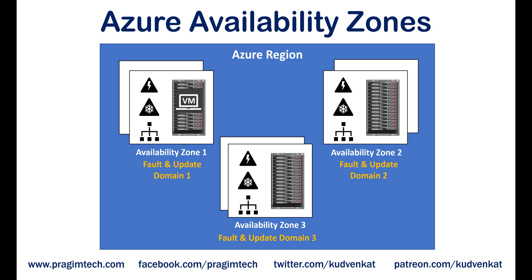For example, if you create three virtual machines across three availability zones in an Azure region, your VMs are effectively distributed across three fault domains and three update domains. If one of the availability zones has gone down for some reason, we still have two VMs from the rest of the two availability zones. Similarly, if there is an update or a patch to be applied, Azure schedules these at different times for different availability zones, so only one availability zone is affected while the update is being applied.